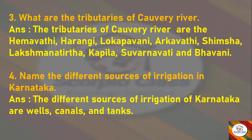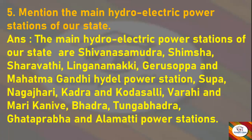Next question: Name the different sources of irrigation in Karnataka. Answer: The different sources of irrigation in Karnataka are wells, canals, and tanks. Next: Mention the main hydroelectric power stations of our state. Answer: The main hydroelectric power stations are Shivanasamudra, Shimsha, Sharavati, Linganamakki, Gerusoppa, and Mahatma Gandhi Hydel Power Station.